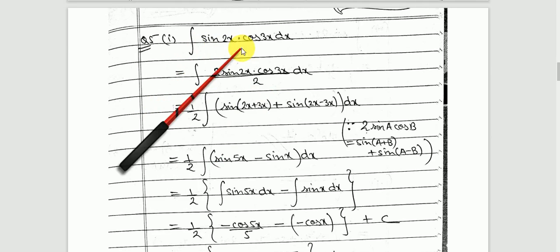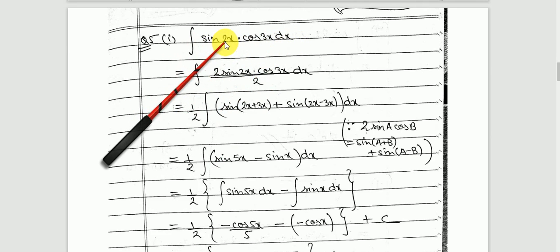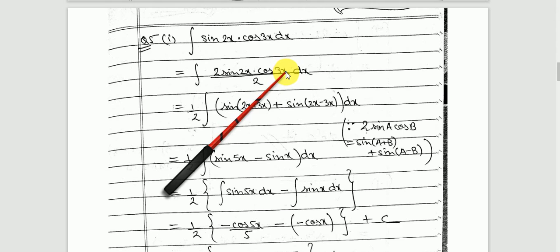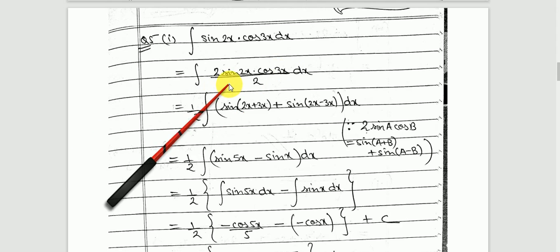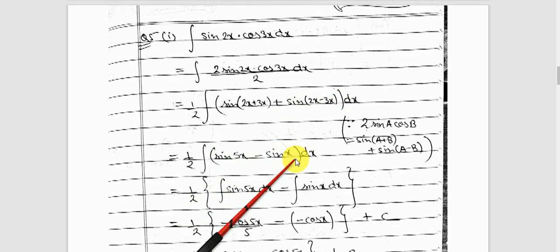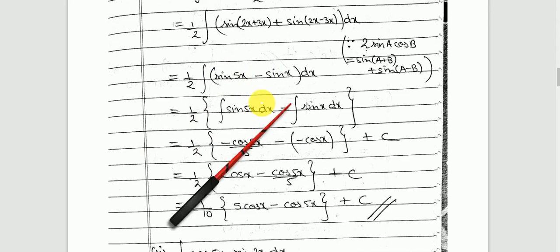Next, integrate sin 2x times cos 3x with respect to x. We don't have a direct formula, but if we multiply and divide by 2 we get 2 sin 2x times cos 3x. Recall from class 11 the formula: 2 sin A cos B = sin(A+B) + sin(A−B). Here A = 2x and B = 3x, so 2 sin 2x cos 3x = sin 5x + sin(−x) = sin 5x minus sin x. Now you know the integration of each term — write them separately and integrate to get your answer.